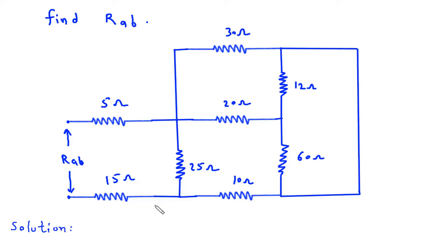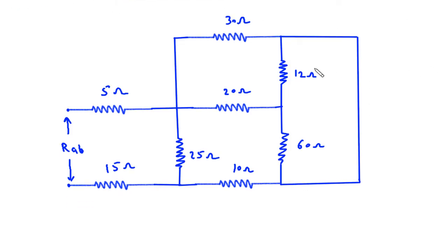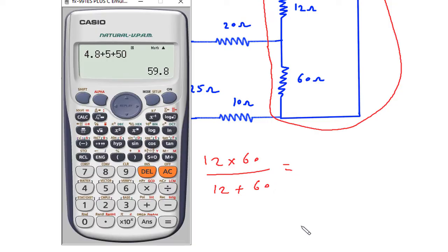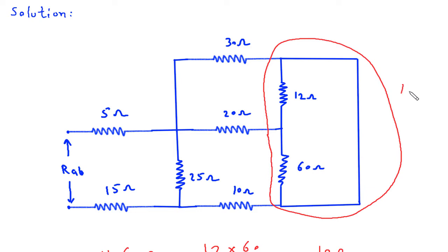First of all, we will redraw the circuit. As we can see, this 12 ohm and 60 ohm are in parallel, so this will be 12 ohm parallel with 60 ohm. So 12 into 60 divided by 12 plus 60, so it is 10 ohm.